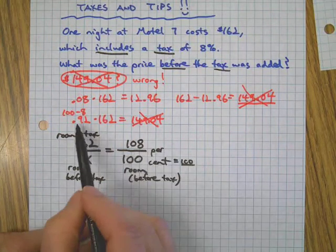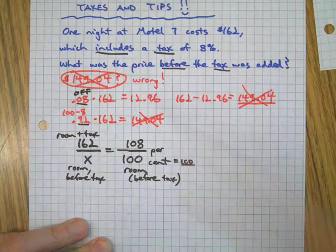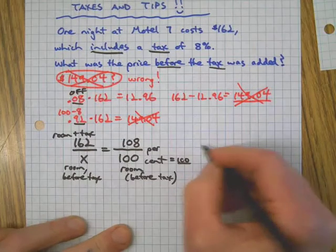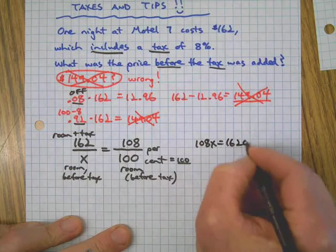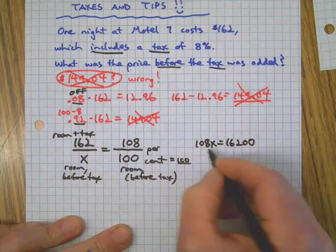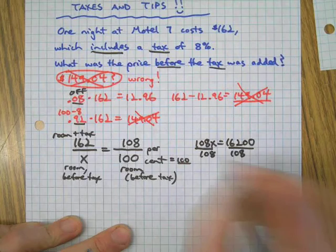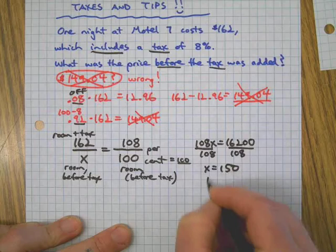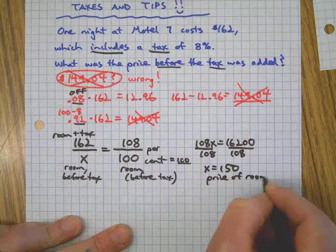So there's our proper way to set this up. See how different that is from getting the 92 or the 8 percent off up here? It's a lot different. And here's how we do this: we're just going to cross multiply and solve it. I'm going to divide both sides by 108.